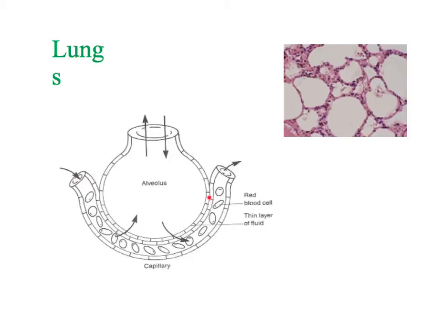The alveoli have a folded shape, which gives them a large surface area. As you can see, there are also many of them, so collectively they provide a large surface area. The next is the difference in concentration.